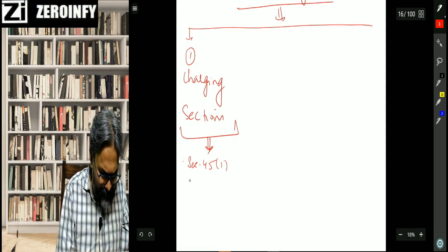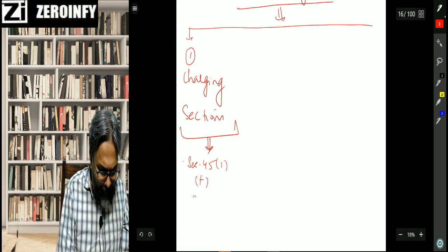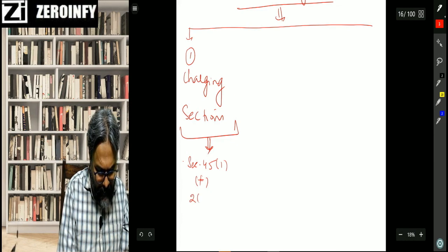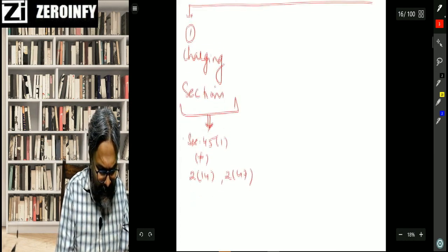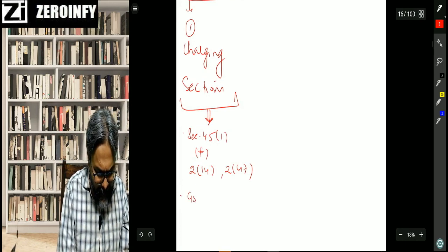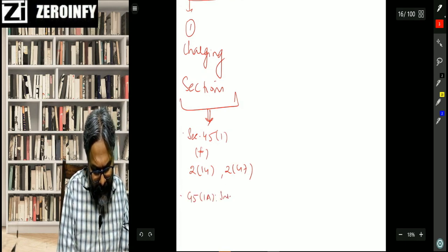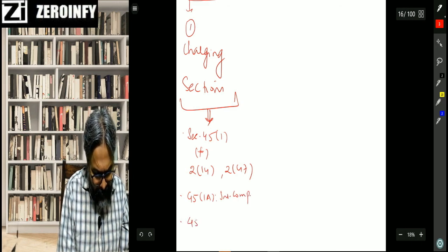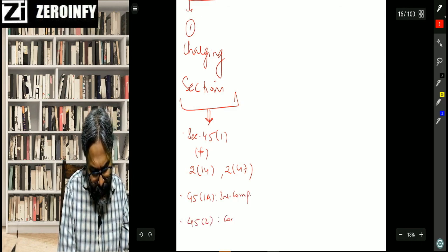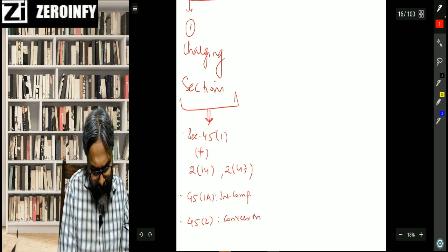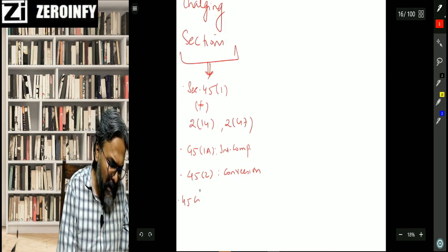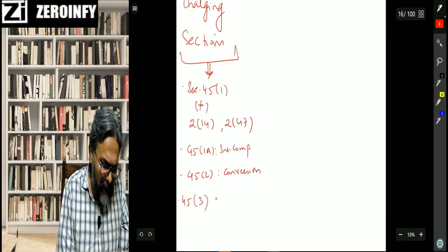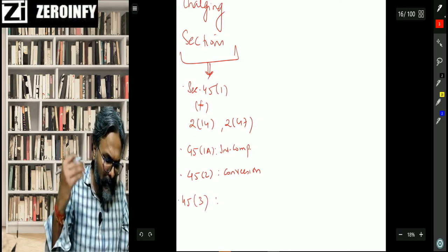If you want, I will just go through it for all of you. So the sections which we have discussed, charging section apart from this 45.1, we have also touched upon these two: definition of capital asset and the definition of transfer, but the selected reading only is required. Thereafter, 145 money that insurance compensation money received on the destruction of the asset. Thereafter, 45.2 conversion of the capital asset into stock and trade.